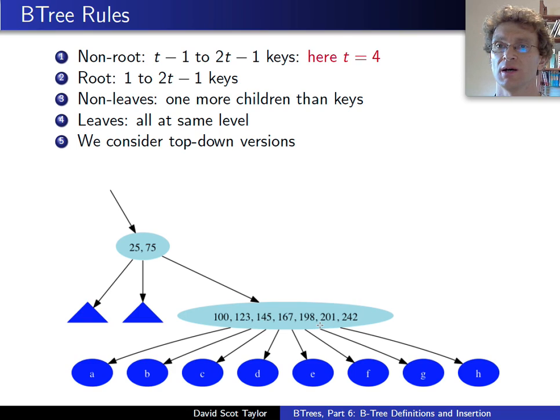In this case, I'm going to say t equals four. For sure, this must be a root node, because once you have seven keys over here, you would never be allowed to have an inner node other than the root with fewer than three keys. But in this case, I'm going to say we have a t of four, so this node here looks full. The root is not necessarily full.